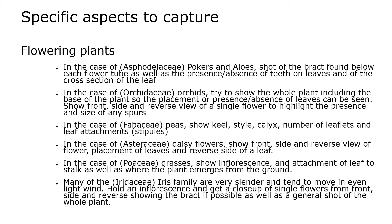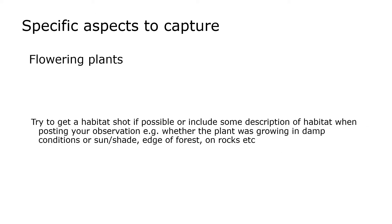For the peas, show the keel, style, calyx, number of leaflets, and leaf attachments. For daisy flowers, show the front, side, and reverse view of flowers, the placement of leaves, and the reverse side of a leaf. For grasses, show the inflorescence, attachment of a leaf to the stalk, and where the plant emerges from the ground. Many iris family plants are very slender and tend to move in even the slightest wind — hold an inflorescence in your hand and get a close-up of a single flower from front, side, and reverse, showing the bract if possible, plus a general shot of the whole plant. Try to get a habitat shot or include a description of habitat — for example, whether the plant was in damp conditions, sun, shade, edge of forest, on rocks, and so on.